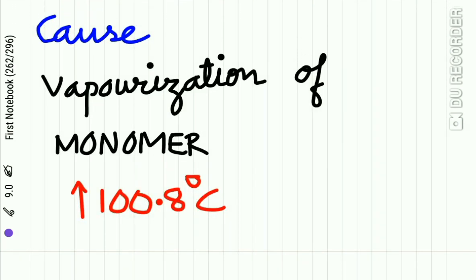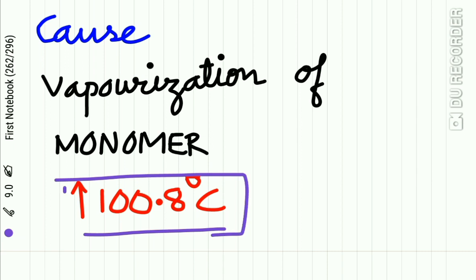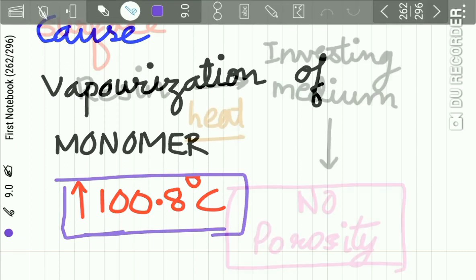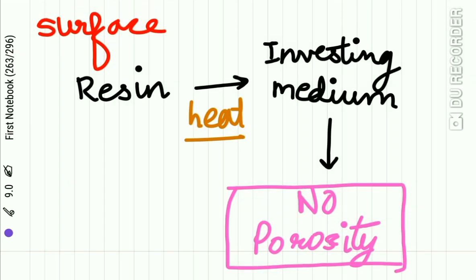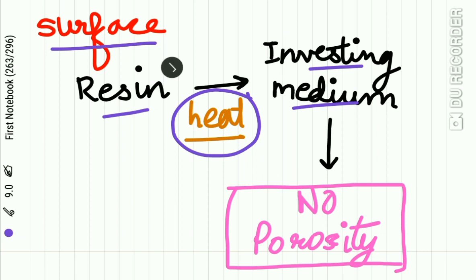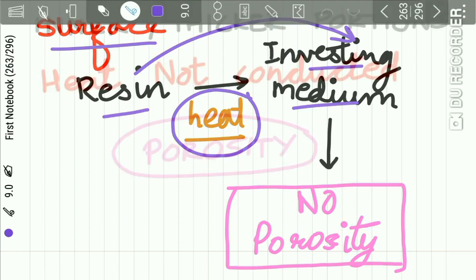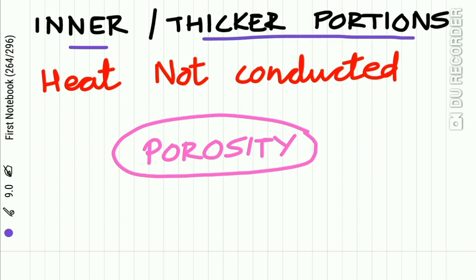The cause of internal porosity is the vaporization of monomer when the temperature of the resin increases above the boiling point of the monomer, i.e., above 100.8°C. On the surface of the denture, the resin is in contact with the investing medium (gypsum product — stone or plaster), so heat applied is conducted from the resin into the investing medium, and no porosity occurs. But in the inner or thicker portions, heat is not conducted from the resin to the gypsum product, resulting in porosity.